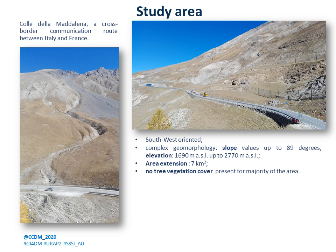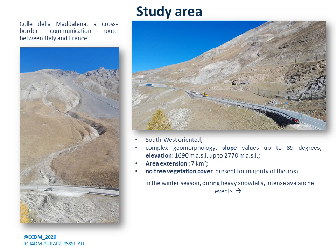The study area is located at the Italian-French state border along an important cross-border communication route. The name of the locality is Colle della Maddalena, nearby the village of Argentera. As you can see from the pictures, the area has a very complex geomorphology with very high slope values. Due to the extreme environmental conditions, no tree vegetation cover is present for the majority of the area. In the winter season and during heavy snowfalls, a big part of the road is involved in intense avalanche events that negatively impact on local and border traffic.